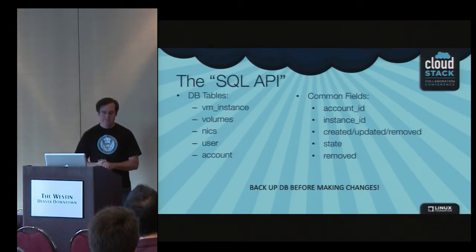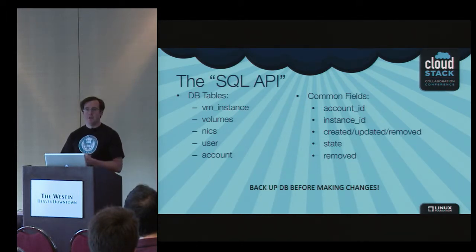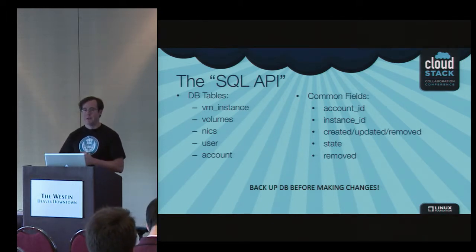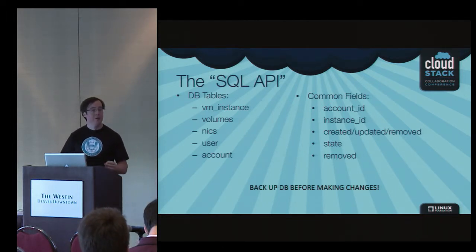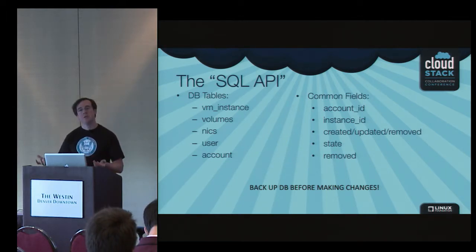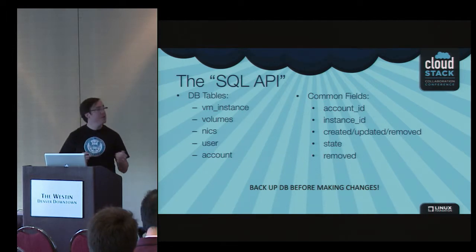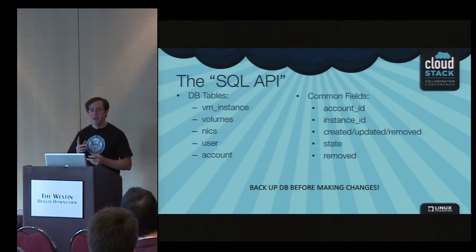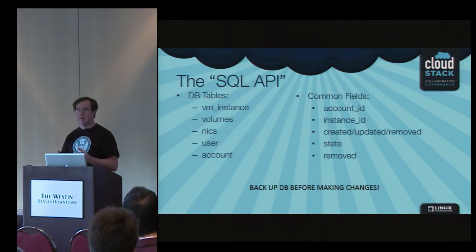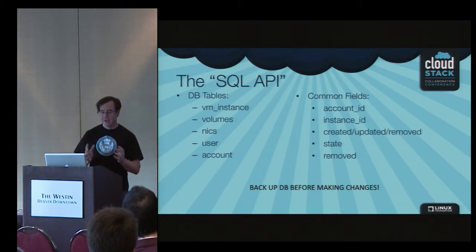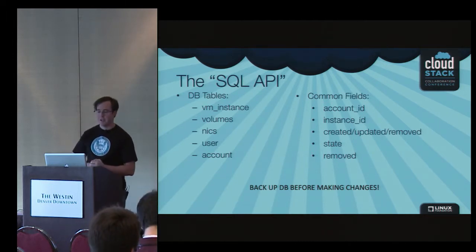If I had to give you a list of five tables you should go look at and be familiar with, this would be them. VM instance is the main place where a VM is defined within CloudStack. Volumes is your main place for where disks are defined. My point is to talk about this from the view of doing recovery, but also to show that once you have this level of familiarity, you're able to do a lot more with CloudStack than what the APIs cover so far.